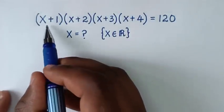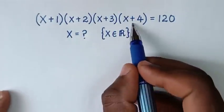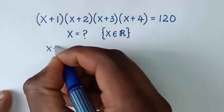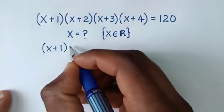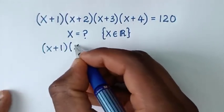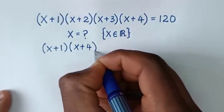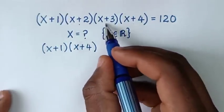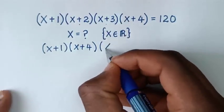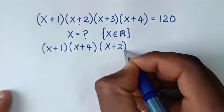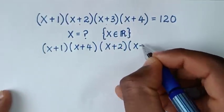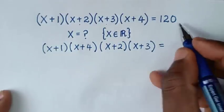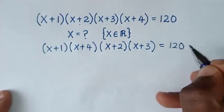We'll start by taking (x+1) times (x+4). So it will be (x+1)(x+4). Then we'll take (x+2) times (x+3), so it will be (x+2)(x+3) = 120.